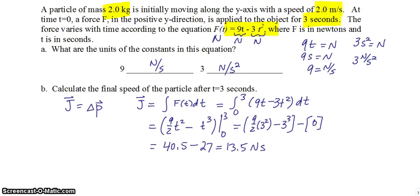So the impulse, and thus the change in momentum of the object, is 13.5 newton seconds. The object starts at 2 meters per second and has a mass of 2 kilograms. Let's plug that in: J equals change in momentum.